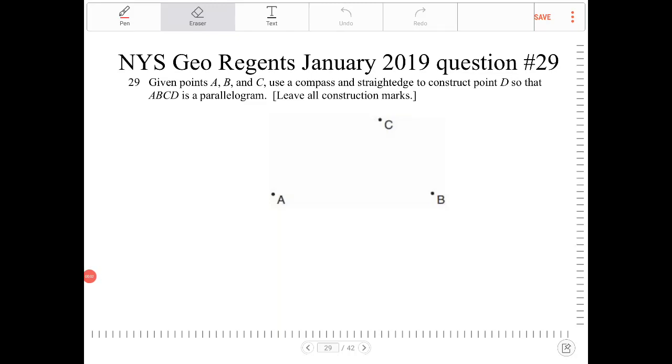Given points A, B, and C, use a compass and straightedge to construct point D so that ABCD is a parallelogram.